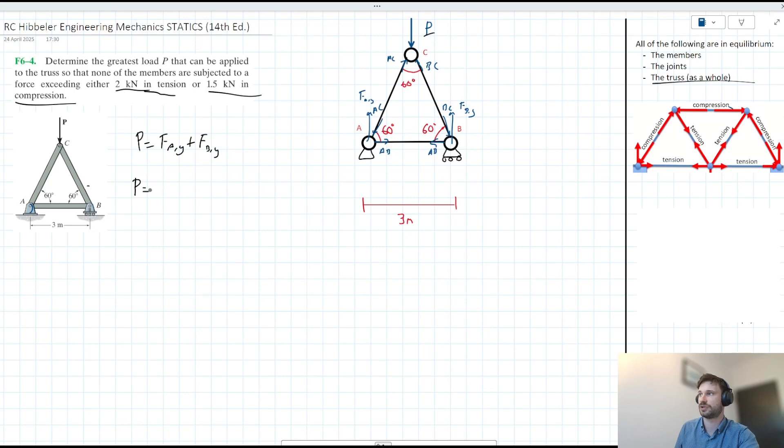So we can say that P is equal to the sum of the vertical components of AC and BC, right? So we know that AC and BC are acting at 60 degrees to the horizontal since we can kind of carry up that 60 degree angle there. And so we have 60. Can't write that small, but we have 60 degrees acting there, right?